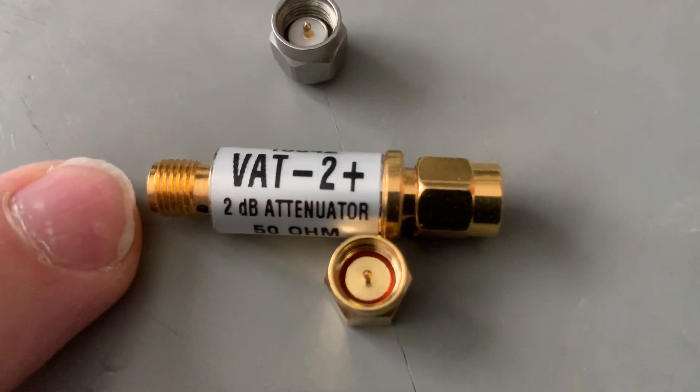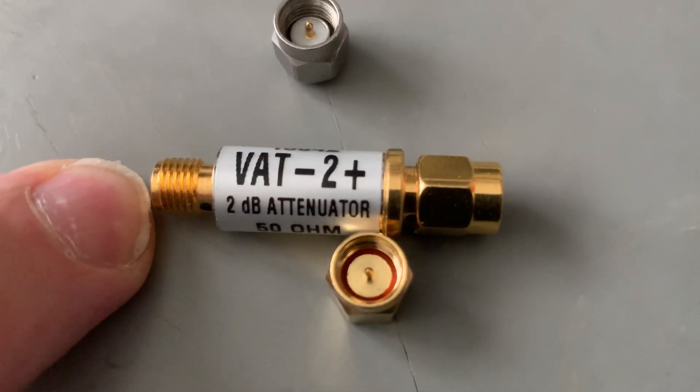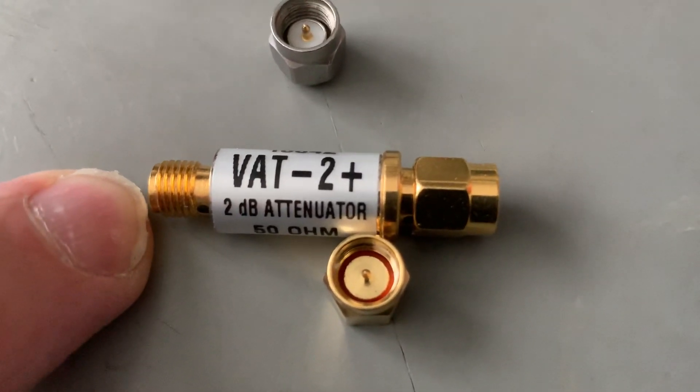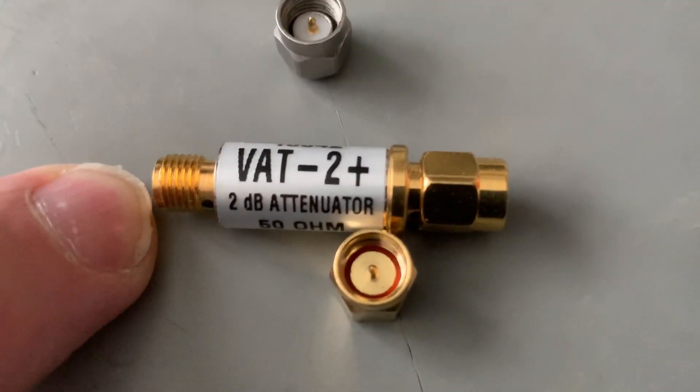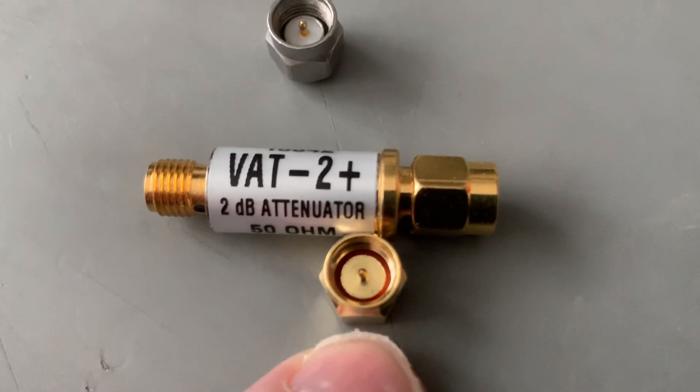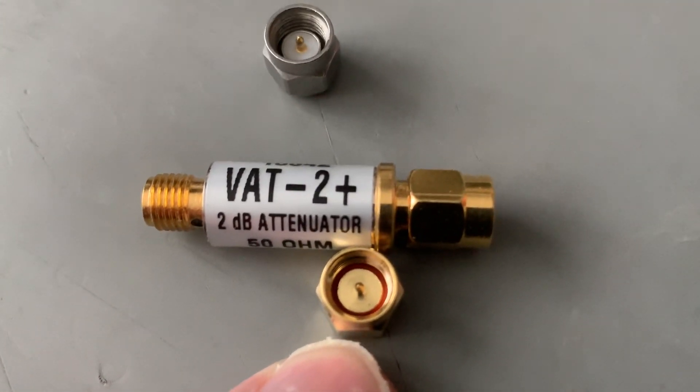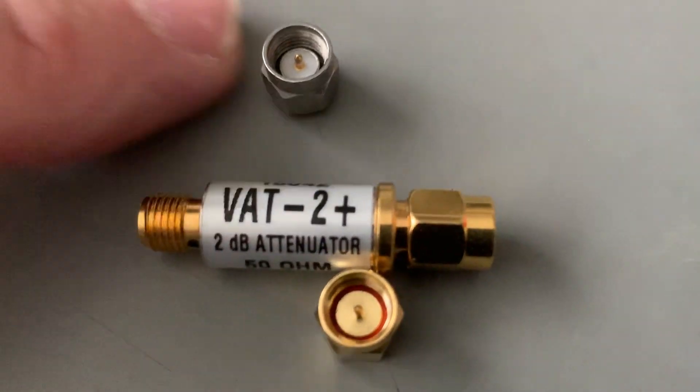In the middle here we have an attenuator, it's a 2dB attenuator, so if one end is left open it will have about a 4dB return loss. At the bottom we have a coaxial short.